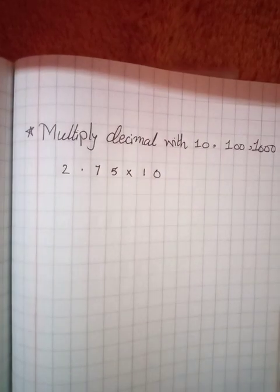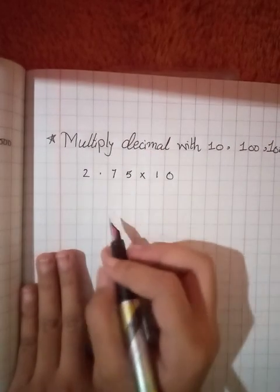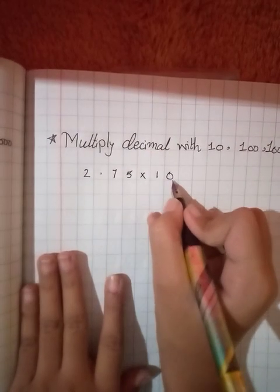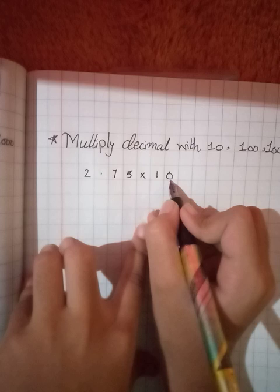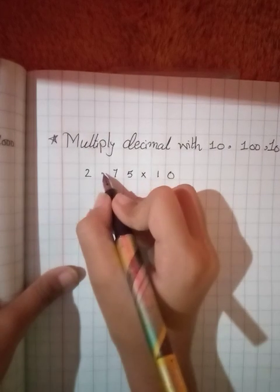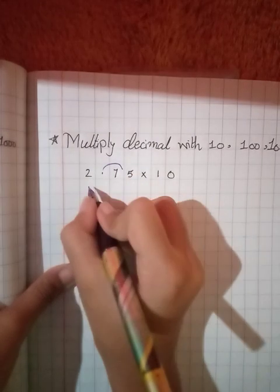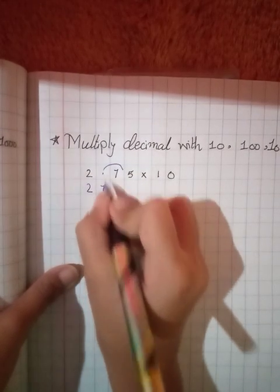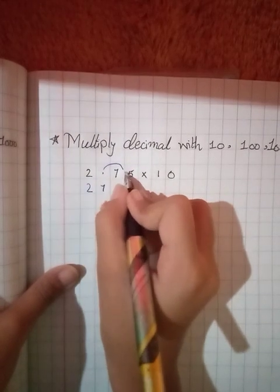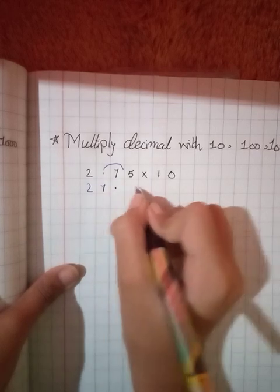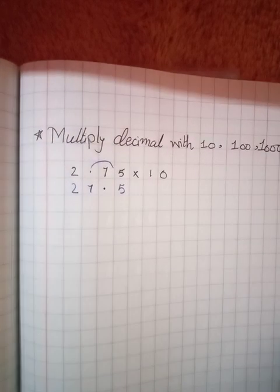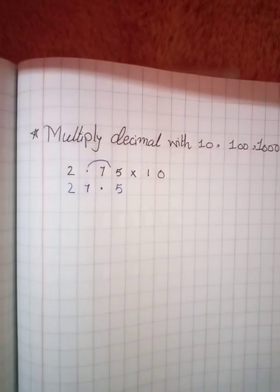When we multiply decimals, we have to look at the zeros. In this equation we have one zero, so our decimal point moves forward one place. So our answer is 27.5. The decimal point moved forward past the zero.